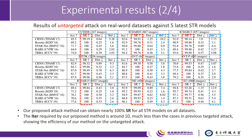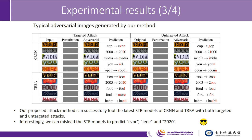This slide also shows the result of the untargeted attack on a real-world dataset, and the result shows that all STR models can be easily fooled by our proposed attack method. We also present typical adversarial examples generated by our method. We can see that the latest STR models, CRN and TRBA, can be fooled with both targeted and untargeted attacks.